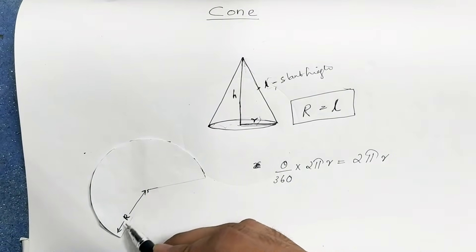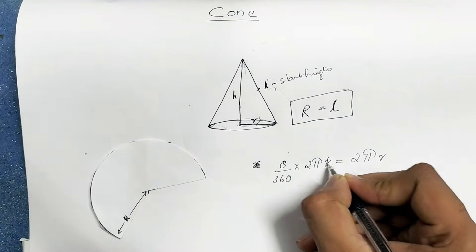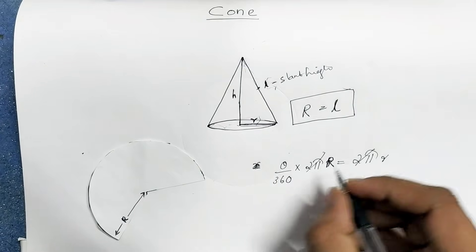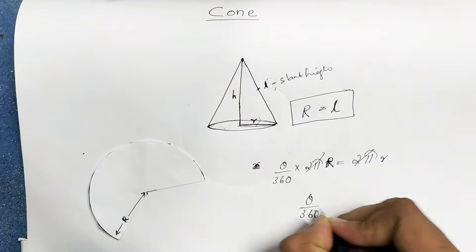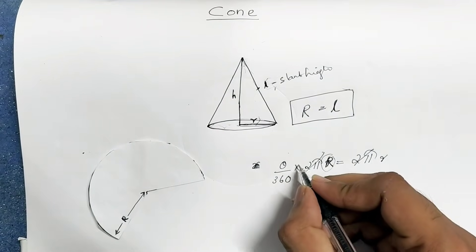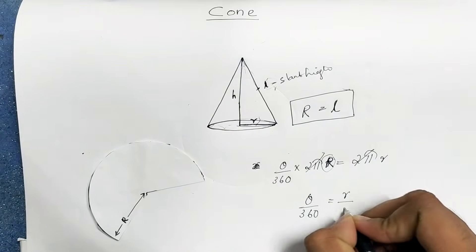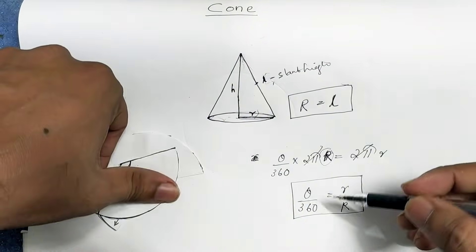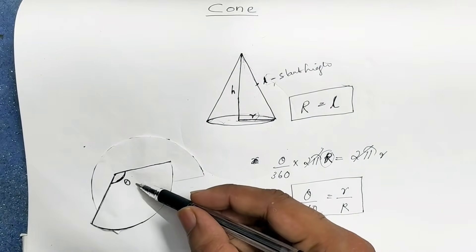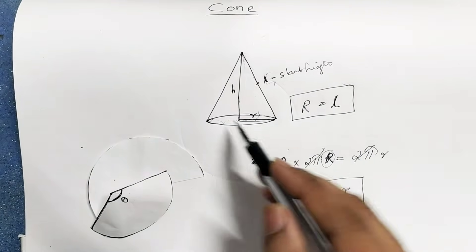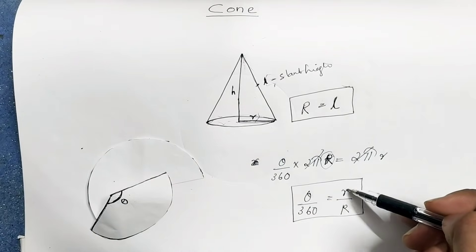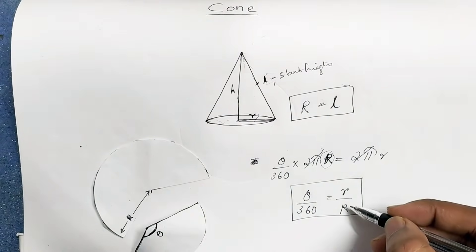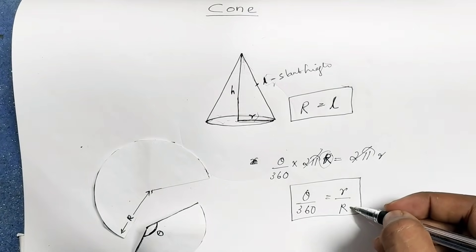We can denote this radius as capital R. The small letter r is the base radius, and the capital letter R is the radius of the sector — the radius of the circle used to form the cone. Theta is the central angle. The small letter r is the base radius, and capital R is the slant height of the cone.